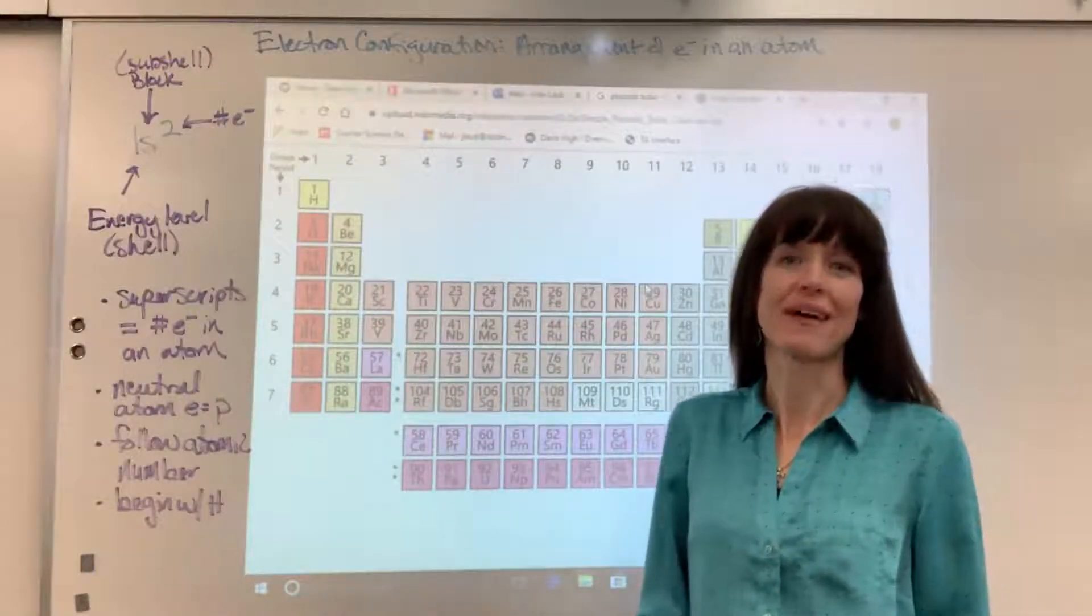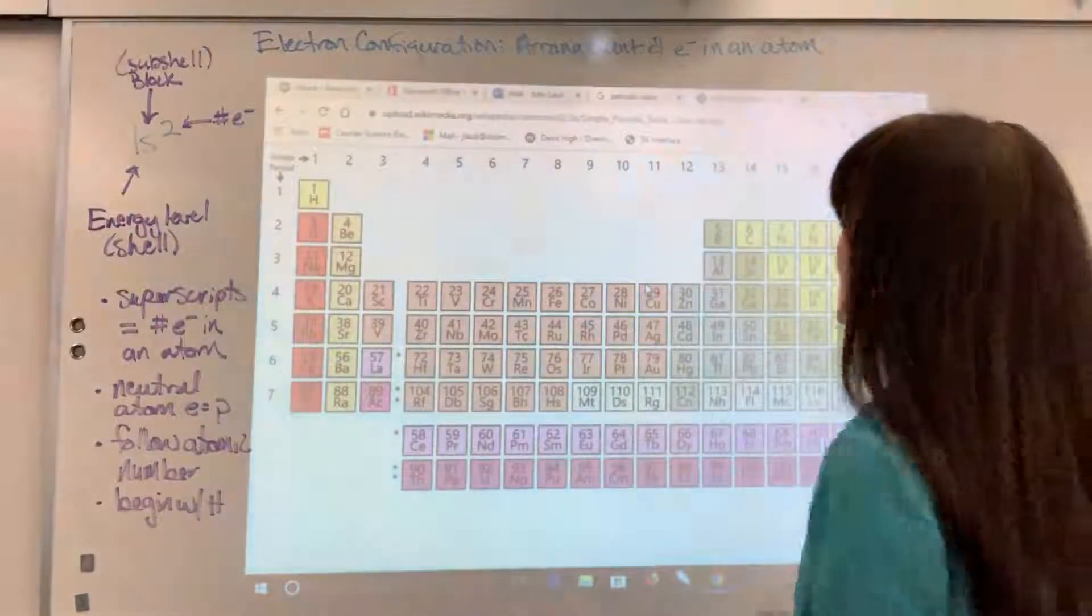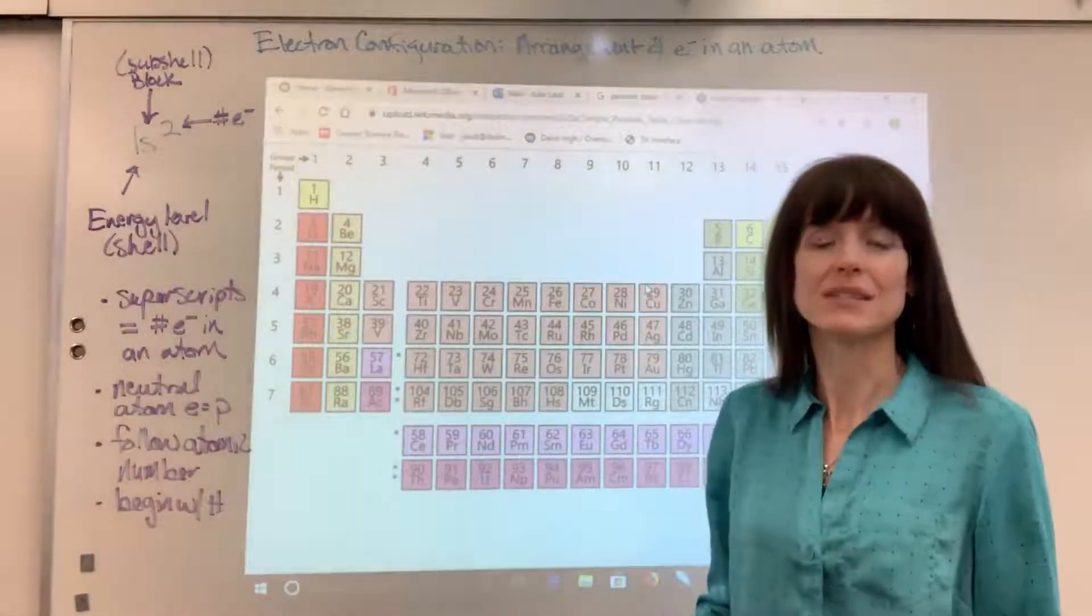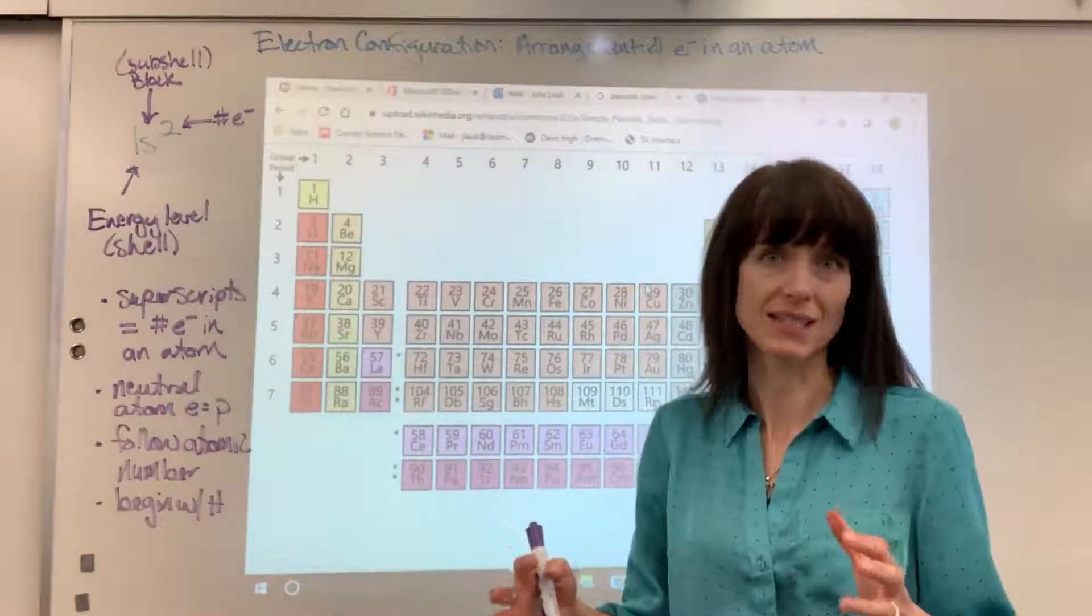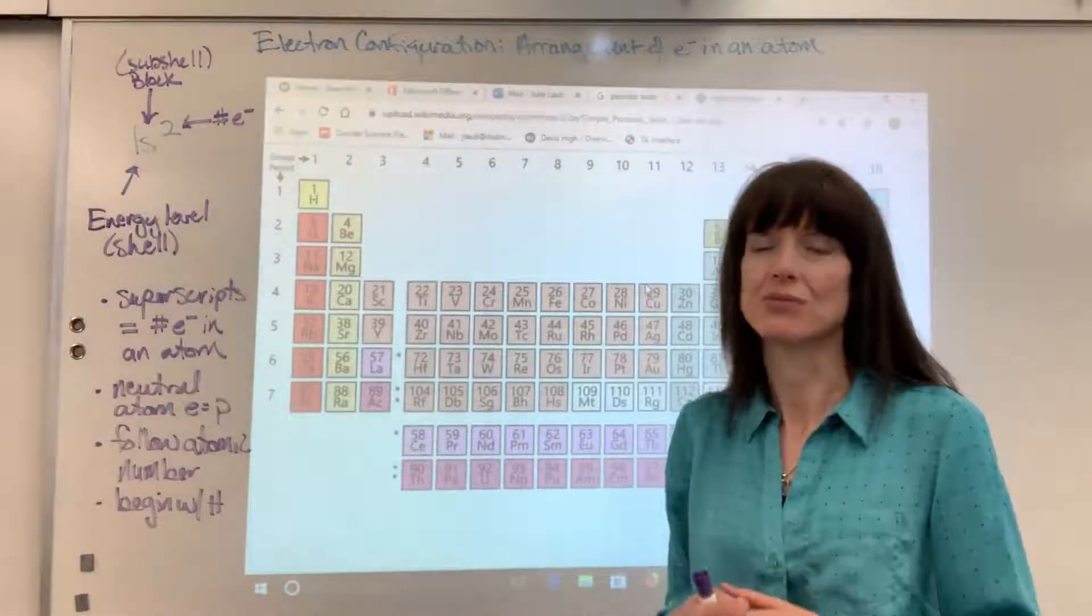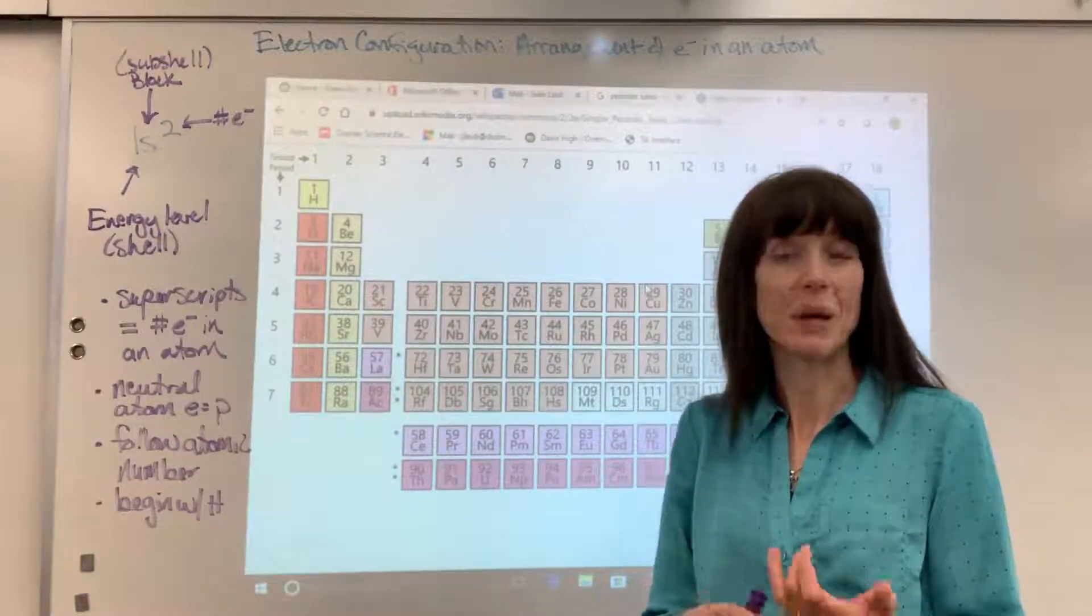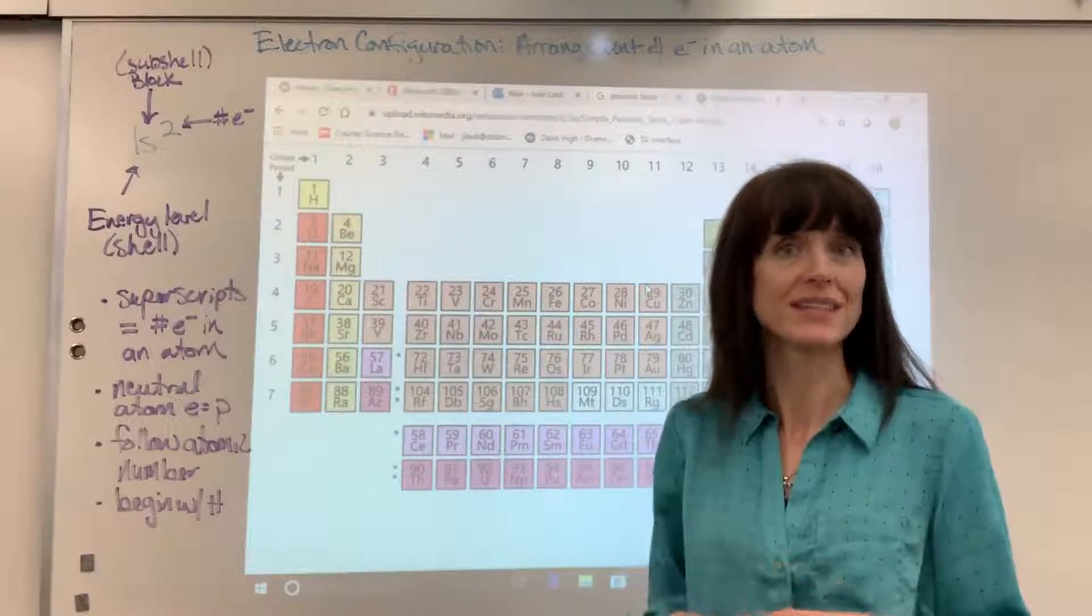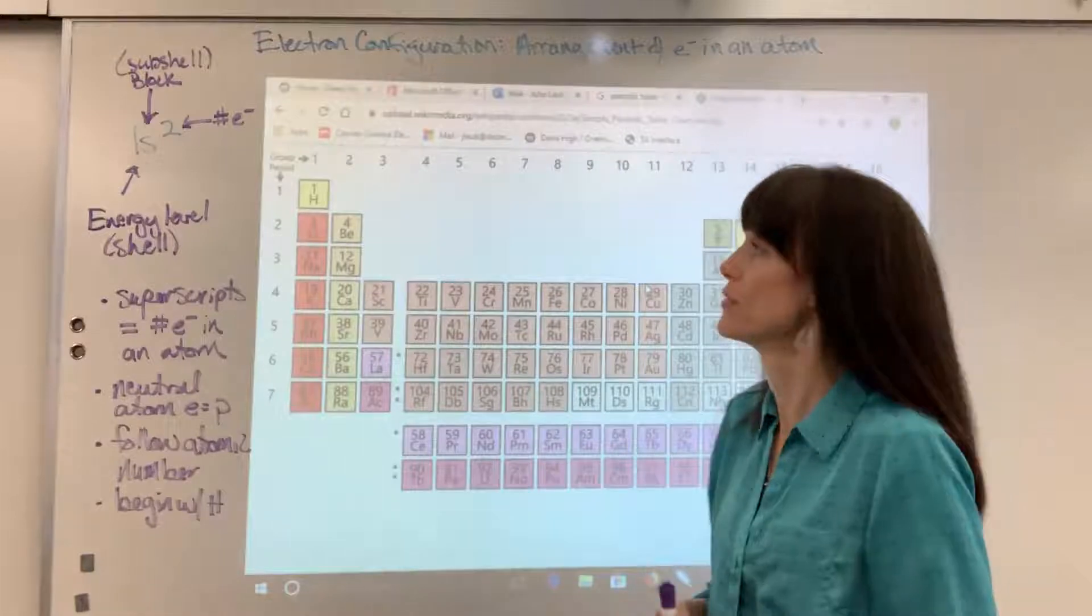Hi, we are going to talk about electron configuration. Now electron configuration is the arrangement of electrons in an atom. I tell my students it's like we give an address to where every single electron exists inside of an atom and it's pretty neat. If we were to draw a picture it gets really complicated and messy and so scientists decided to use numbers and letters to represent where those electrons exist so it's a little bit cleaner. I want to give you just a very foundation of electron configuration.